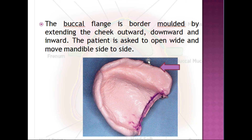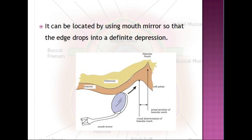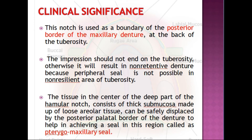The hamular notch is a displaceable area approximately 2 mm wide between the tuberosity of the maxilla and the hamular process of the medial pterygoid plate. It is also called the pterygomaxillary notch and can be located using a mouth mirror so that the edge drops into a definitive depression. This notch is used as the boundary of the posterior border of the maxillary denture.